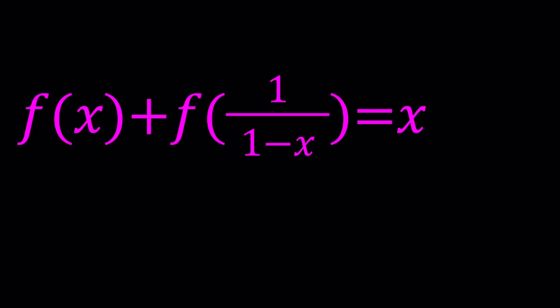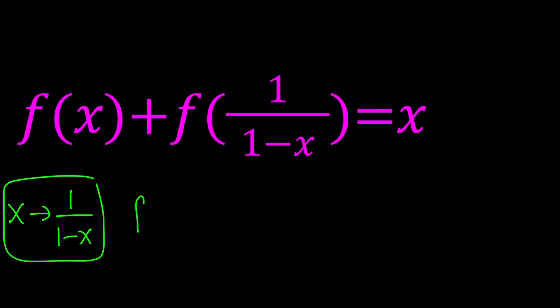I'm going to start by replacing x with 1 over 1 minus x. The reason behind that is it's going to give me something that I already have. So let's go ahead and replace x with 1 over 1 minus x everywhere. And when you do that, you're going to get the following. f of 1 over 1 minus x — that's obviously a direct result here.